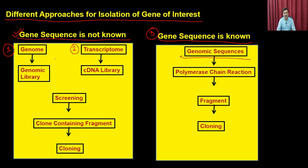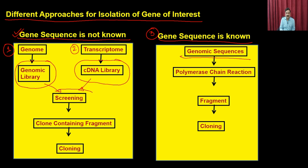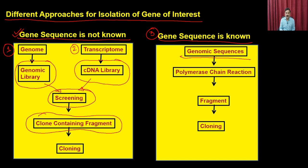The plan for this lecture is: first understand how to prepare a genomic library, then how to prepare a cDNA library. Once libraries are prepared, we use screening methods to identify the gene of interest. We will take up screening methods simultaneously for both library types, then once screened, get the fragment containing the gene of interest and clone it into a vector of choice.